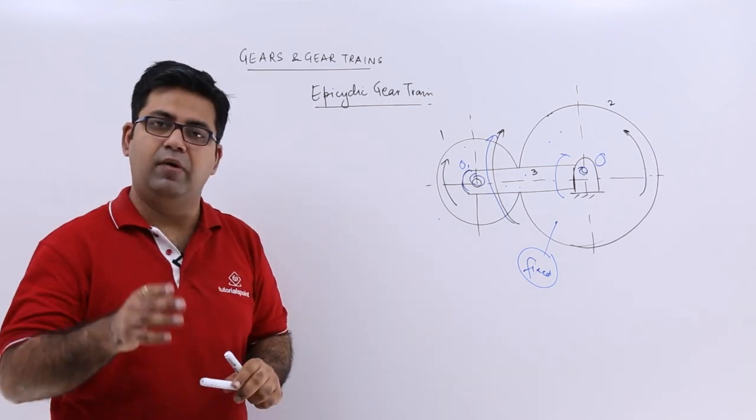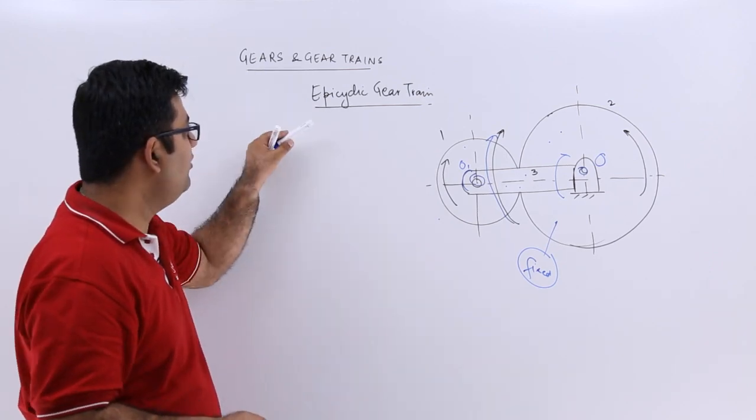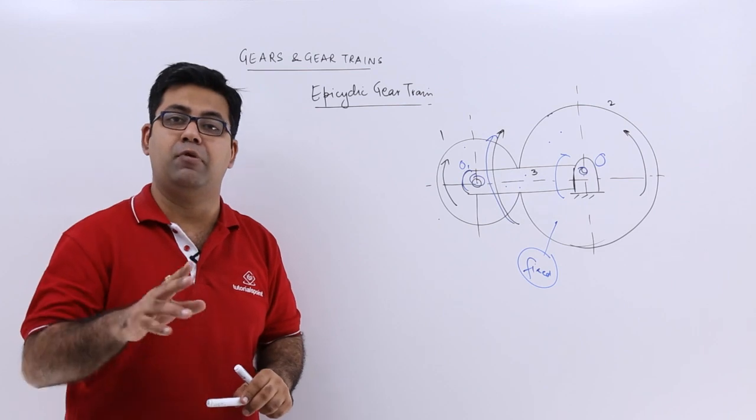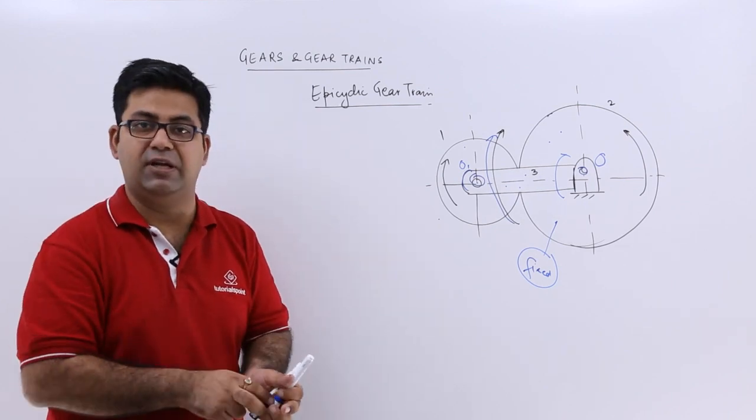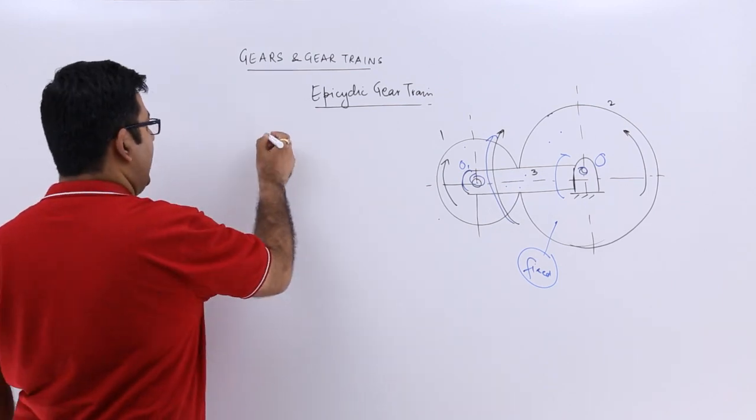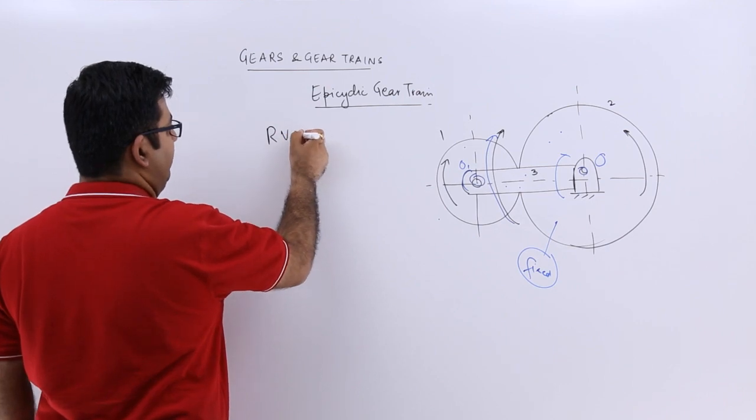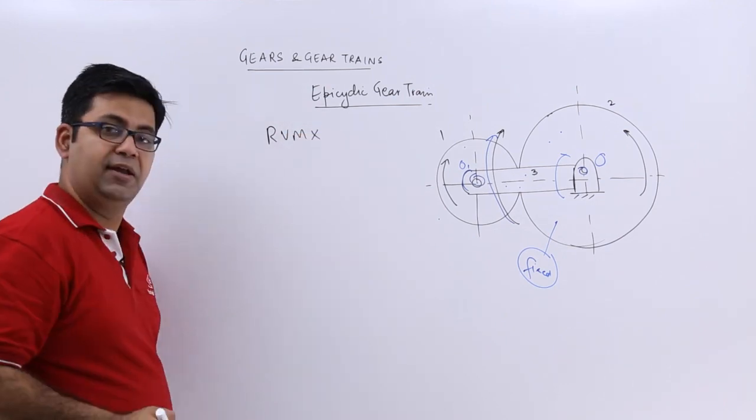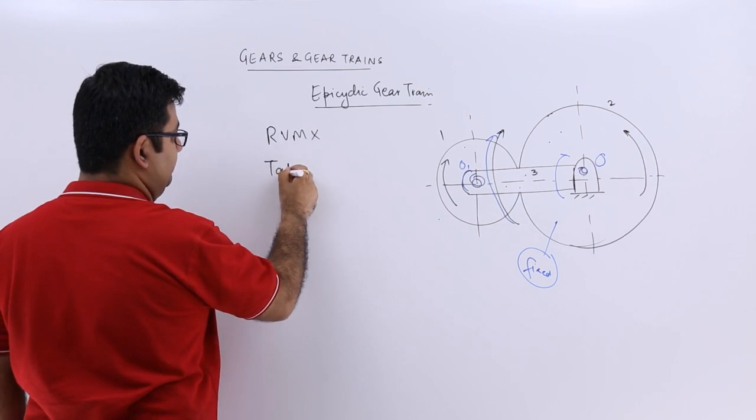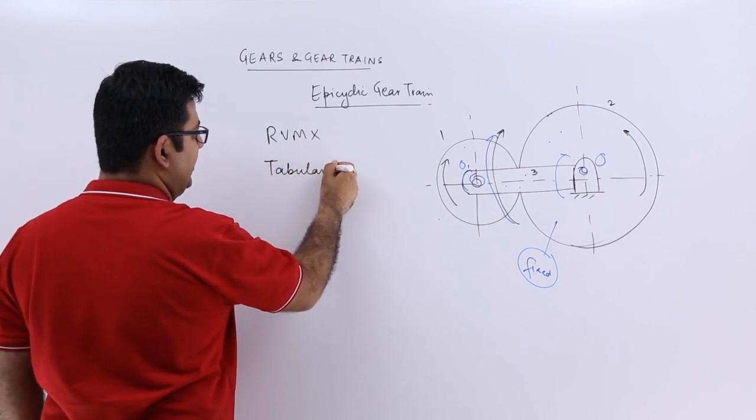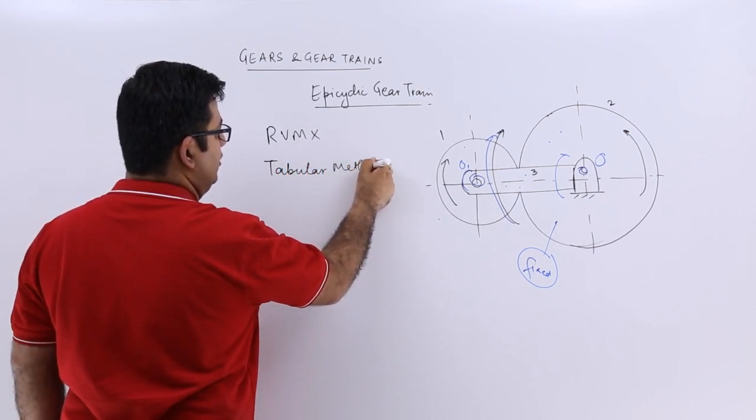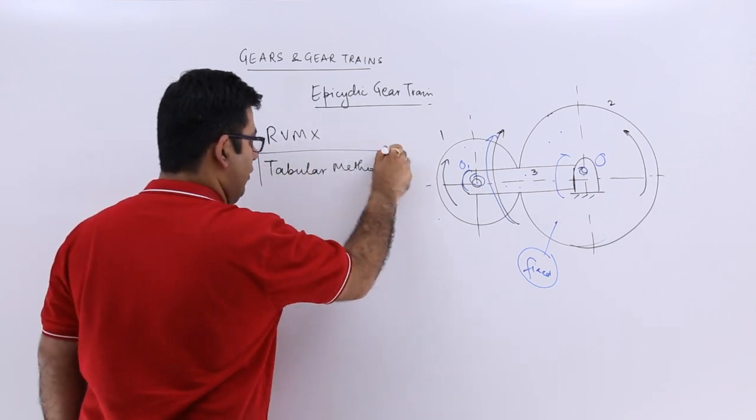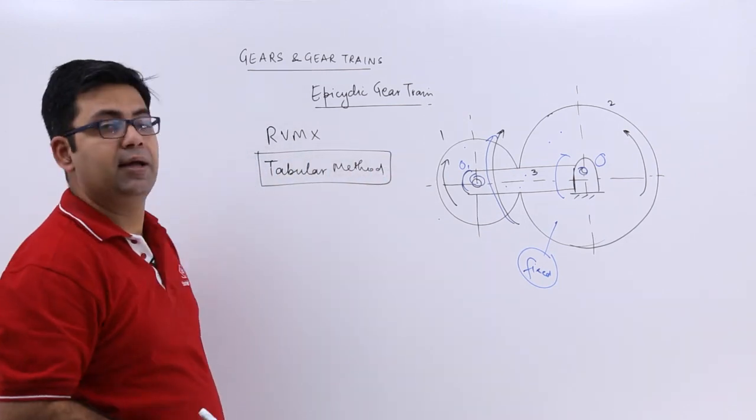So now in the next video, we will look at a method to solve the epicyclic gear train problem and there are two methods basically. The first one is the relative velocity method, but we will not look at that. We will look at the tabular method. So we will take the help of a table to solve the problem on the epicyclic gear train.